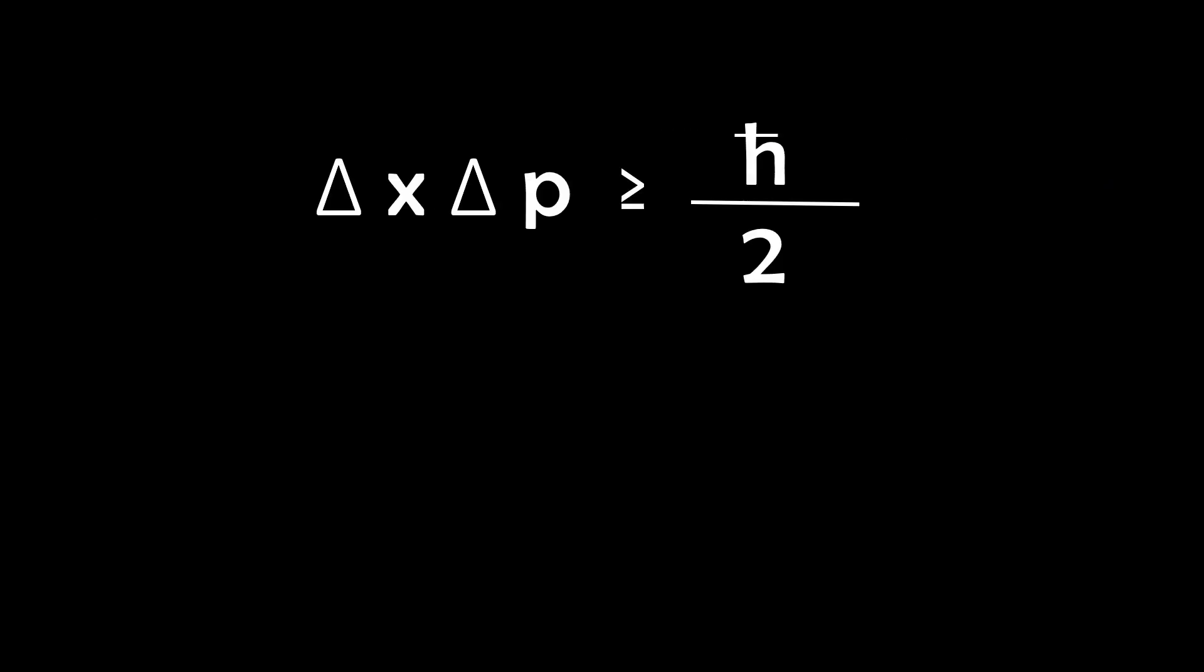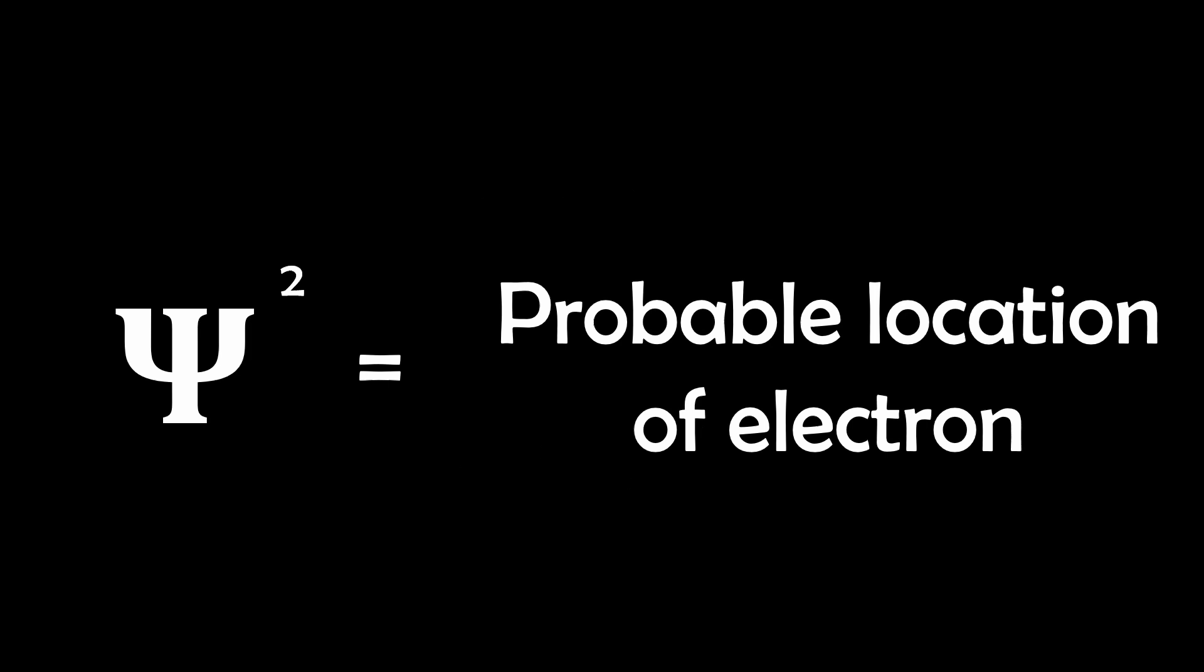It's important to remember Heisenberg's uncertainty principle here that tells us we can't know an electron's exact momentum and position simultaneously. So we can't pinpoint the exact location, but we can map out the probabilities using the squared wave function.